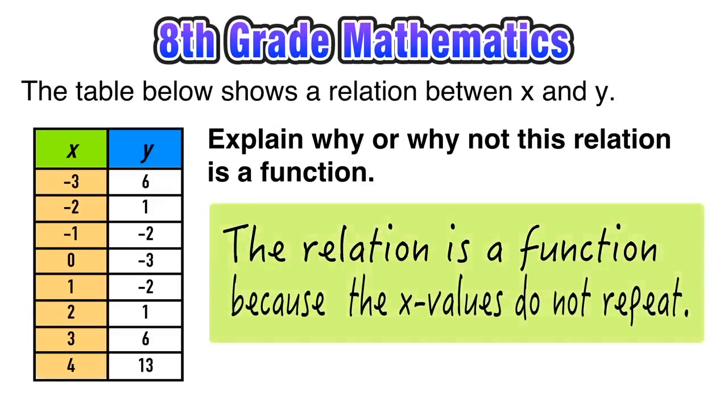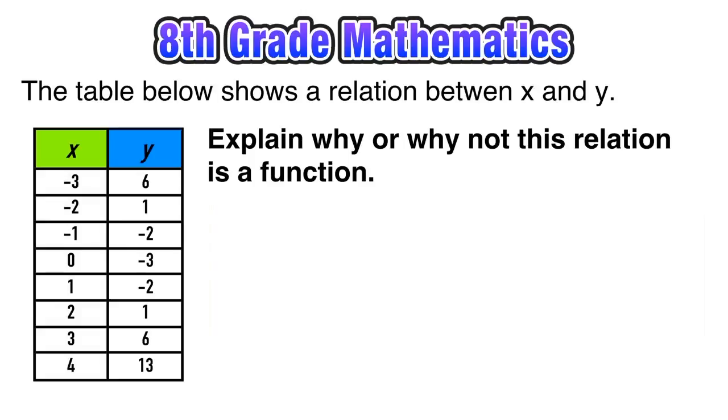Now let's imagine if we change that table. In this case, we replace the x value 2 with 0. If we apply that definition of a function to this new relation, we see that 0 has two outputs.